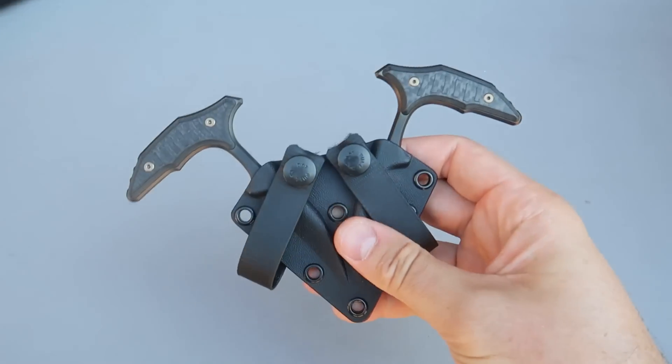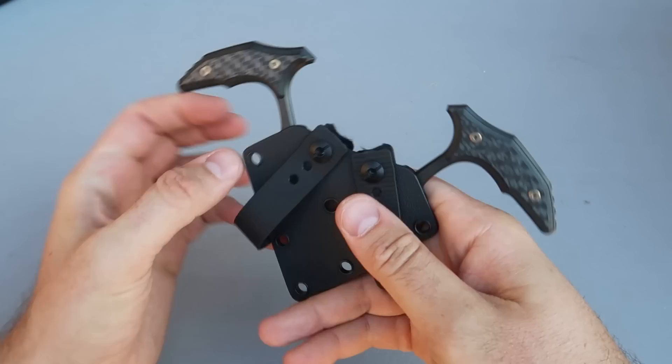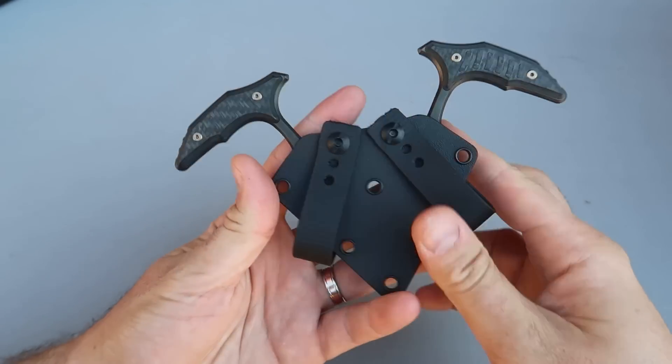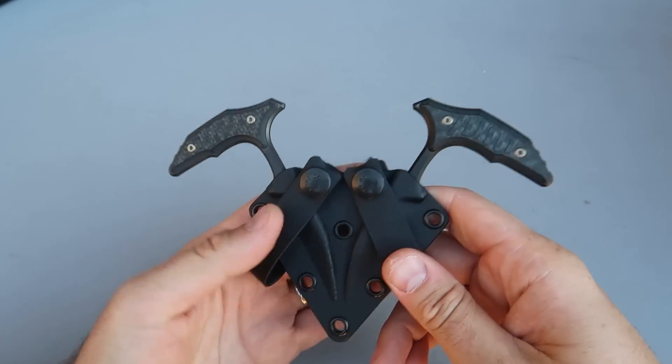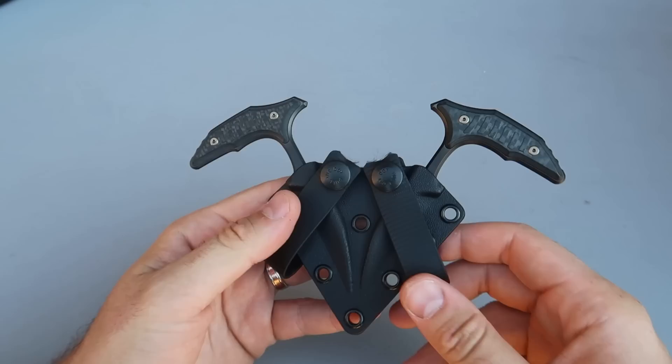Got it here, Microtec double push daggers. It goes onto your belt. Have you ever seen anything like that? This is a carbon fiber handle signature series.